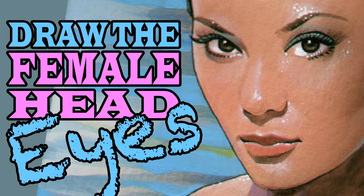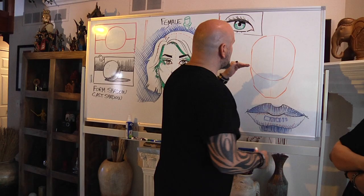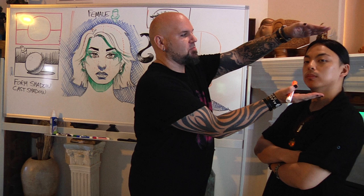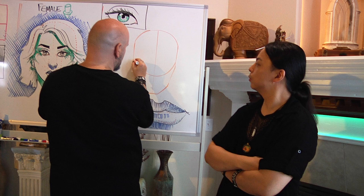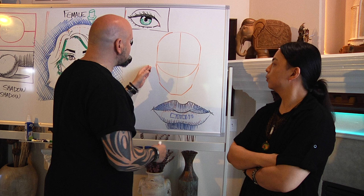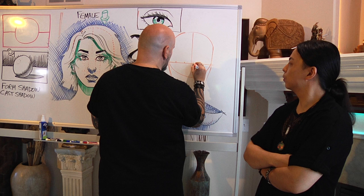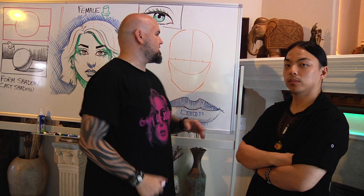Before we start, if you haven't watched the video on drawing female eyes, you need to do that. The eyes are always halfway from the top of the head to the bottom of the chin — that's where the eye line is. We'll go ahead and add that eye line here. The eyes are five eyes across, so we need to guesstimate five equal spaces, and then it's time to add in the eyes.